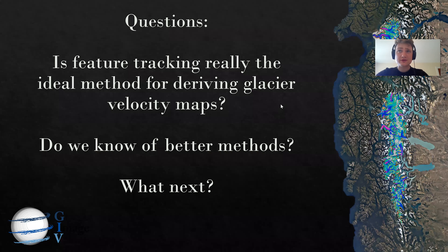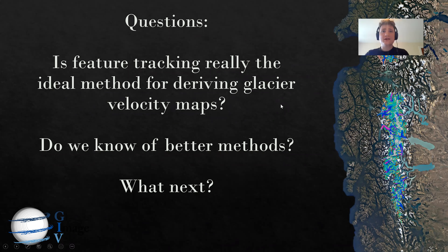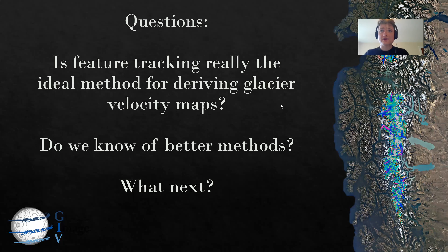There are questions I really wanted to ask everyone: Is feature tracking really the ideal method for deriving glacier velocity maps? What can we do better? Do we currently know of any better methods? And what next?